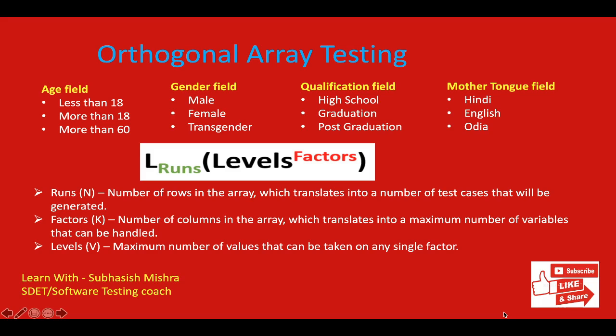Then we determine the maximum number of values for each variable. Here we have three values for each variable — three for age, three for gender, three for qualification, and three for mother tongue. Then we determine the orthogonal array with four factors and three levels. We have four factors: age, gender, qualification, and mother tongue, each having three levels.